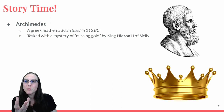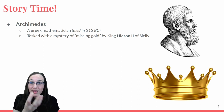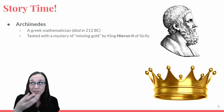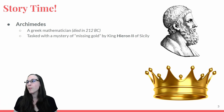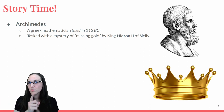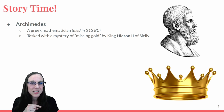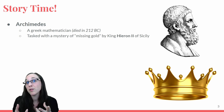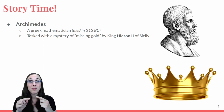The goldsmith was given a pile of gold and told to make the king's crown. The goldsmith made the crown and gave it back to the king. But the king was suspicious, saying, 'I think this goldsmith is up to something fishy — he stole some of that gold and replaced it with something less valuable, maybe silver.'